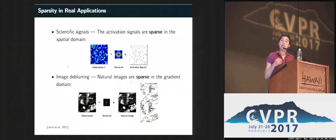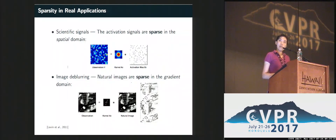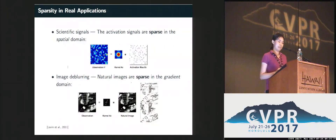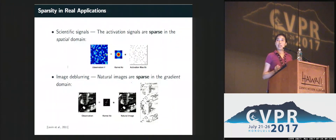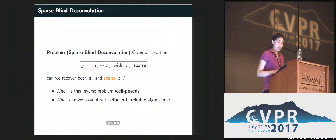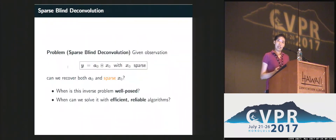Thinking about all the applications mentioned, there is a common notion of sparsity in the underlying signal. For scientific signals, the sparsity is more direct — it's in the spatial domain, where we only observe sparse copies of the signature pattern. For image deblurring, natural images are not sparse in the pixel domain, but they are always sparse in the gradient domain. So the problem we want to formulate here is the sparse blind deconvolution problem.